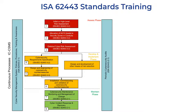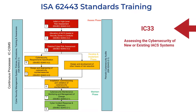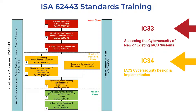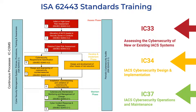The International Society of Automation's 62443 standards provide guidance for all phases of the lifecycle. ISA offers training courses that correspond to the three lifecycle phases. IC33, Assessing the Cybersecurity of New or Existing IACS Systems, covers high-level risk assessments, the allocation of IACS assets to security zones or conduits, and detailed cyber risk assessments. IC34, IACS Cybersecurity Design and Implementation, focuses on developing and implementing countermeasures to reduce the risks of an existing or new IACS system to a tolerable level. IC37, IACS Cybersecurity Operations and Maintenance, provides guidance for maintaining an IACS system.